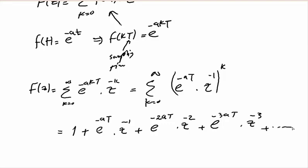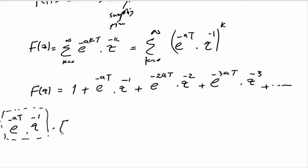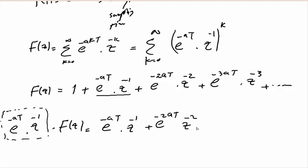This is an infinite series — not a closed-form solution — so we need to find a closed form. We multiply both sides of F(z) by e^(-aT)z^(-1). On the right-hand side, multiplying term by term gives: e^(-aT)z^(-1), plus e^(-2aT)z^(-2), plus e^(-3aT)z^(-3), and so on.